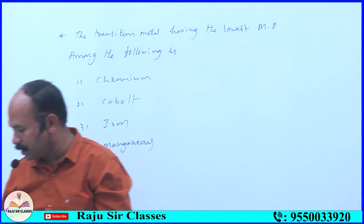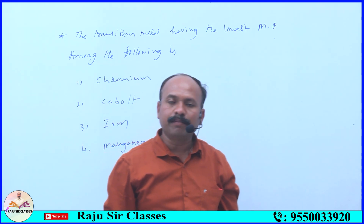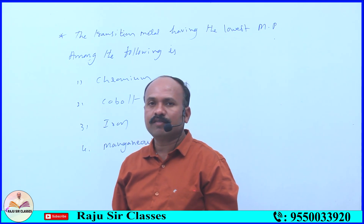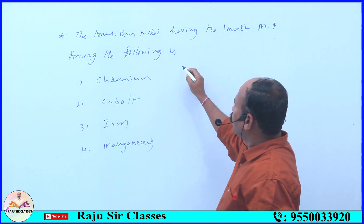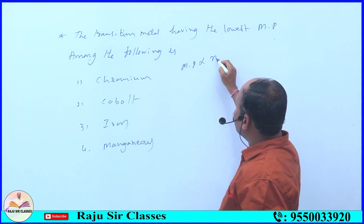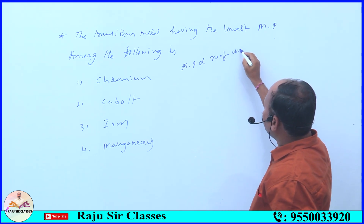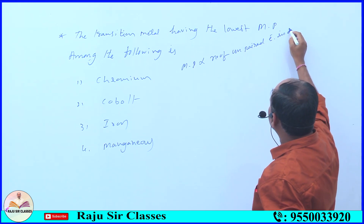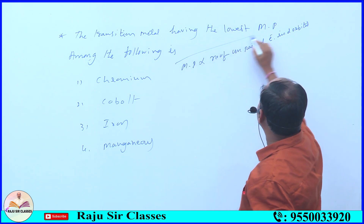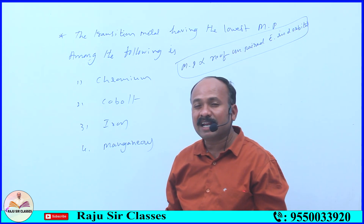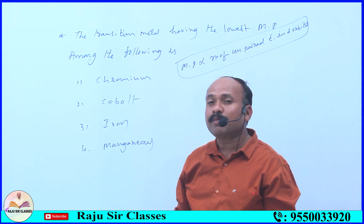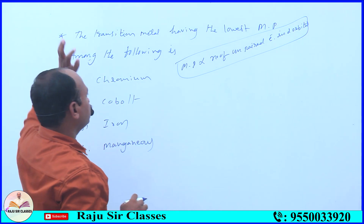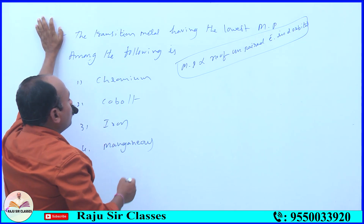What factors affect the melting point of d-block elements? Melting point is directly proportional to the number of unpaired electrons in the d-orbital. More unpaired electrons means higher melting point; fewer means lower.